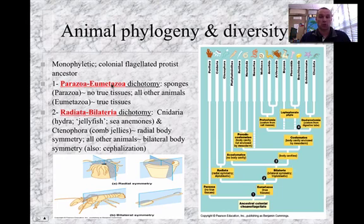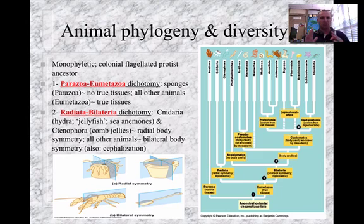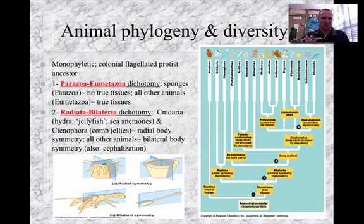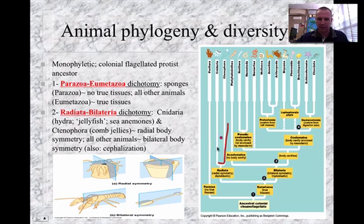Next you look at body symmetry — either radiate or bilateral. Bilateral means the organism can be split right down the middle into two equal halves, like us or a lobster. Radial symmetry means it can be split in more than one place to produce two equal halves — think of a starfish. On the diagram, the radiates are two lineages: cnidaria and ctenophora. All the rest have bilateral symmetry.